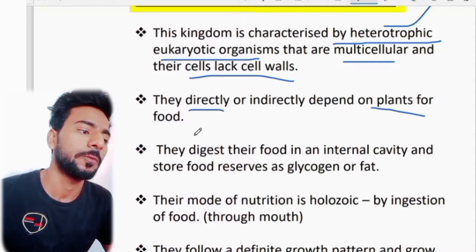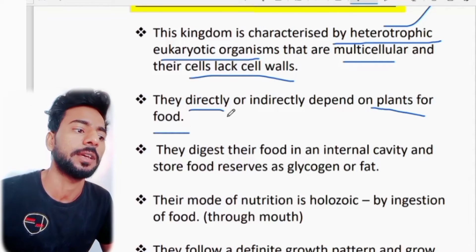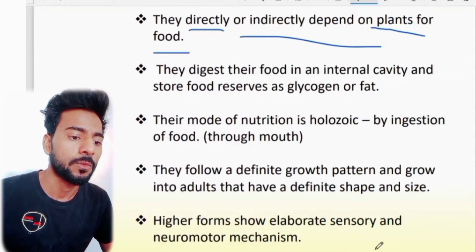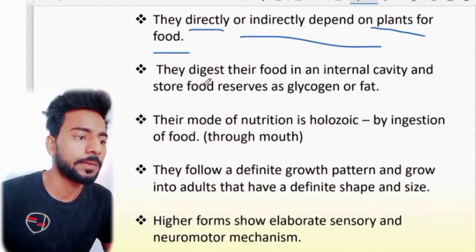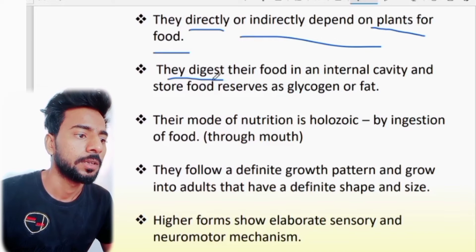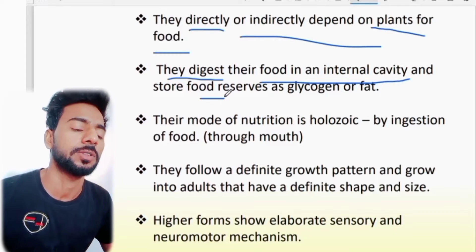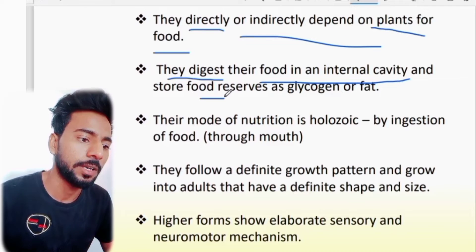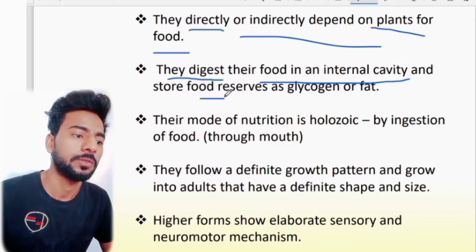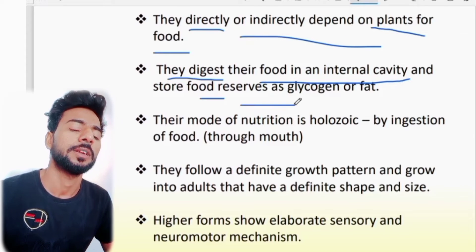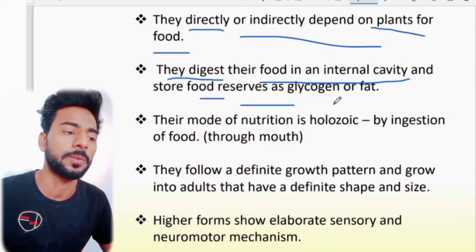It depends on our food and survival. They are directly and indirectly dependent on the plants. Our food is stored in a cavity, like the body cavity. Food is reserved, and after that, glycogen and fat are stored in the body.